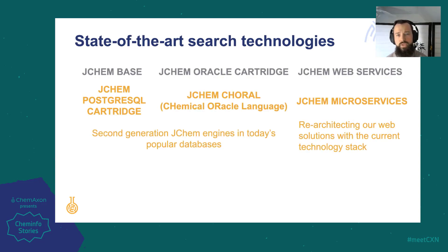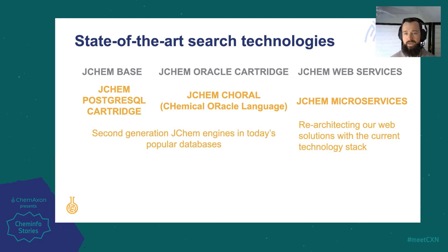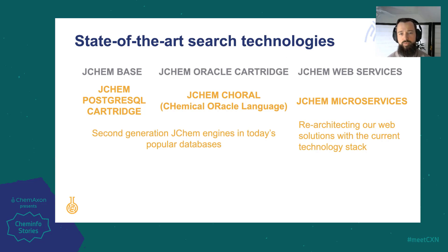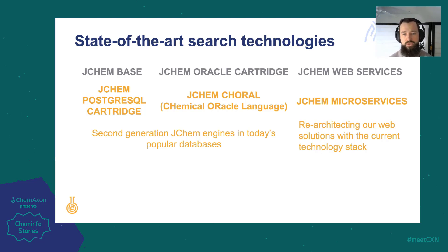Our second generation of JChem engines overhauls these search tools with modern features. All second generation tools run on a brand new engine, taking advantage of the database's inbuilt indexing tools to greatly speed up combined queries. They also provide hit-as-you-draw, near real-time search results, as well as hits sorted in relevance order. Our PostgreSQL cartridge brings chemical searching to this ever more popular RDBMS, while our second generation Oracle cartridge, dubbed CORAL for Chemical Oracle Language, helps bring your searches to the cloud with full AWS RDS compatibility.